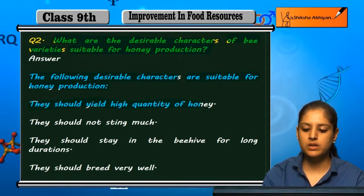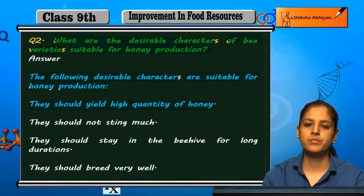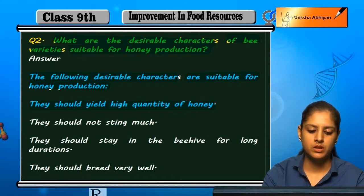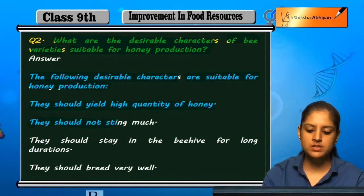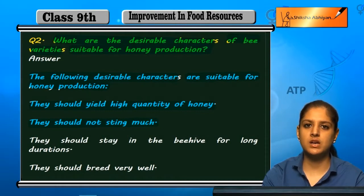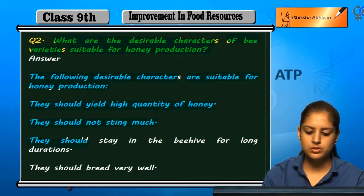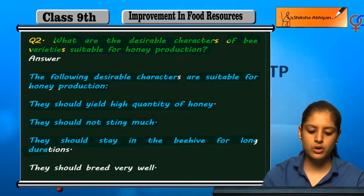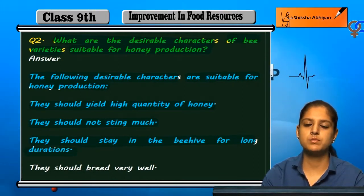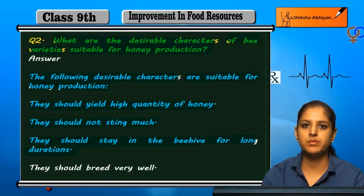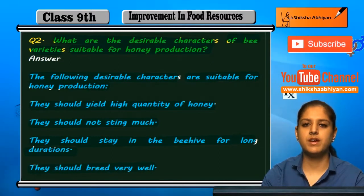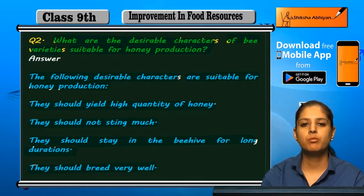They should yield a high quantity of honey. They should not sting much. They should stay in the beehive for a long duration, and they should breed very well — their multiplication in numbers should be very good.